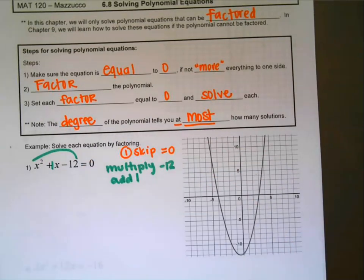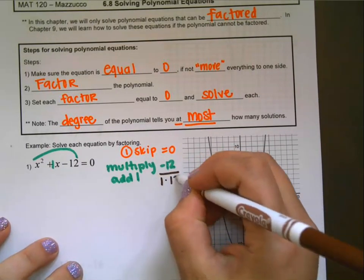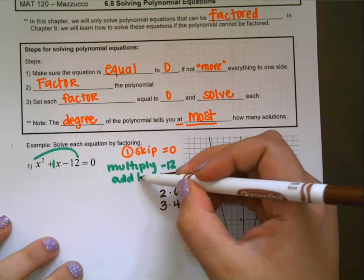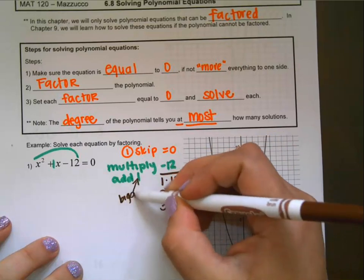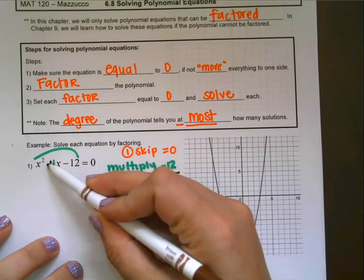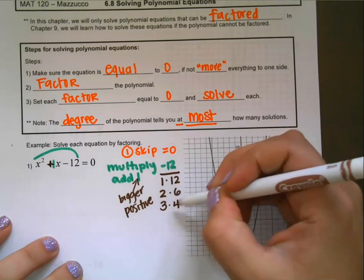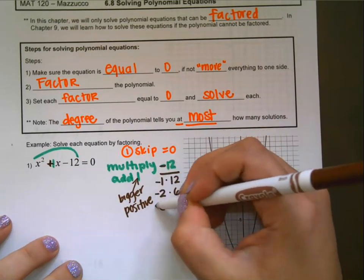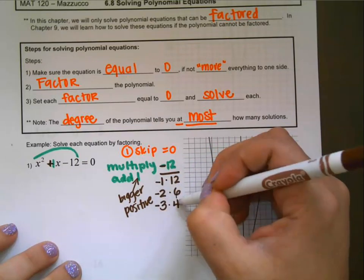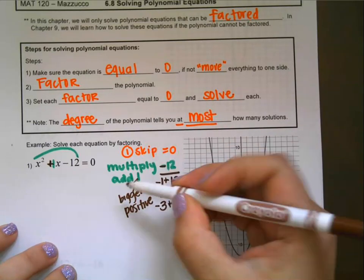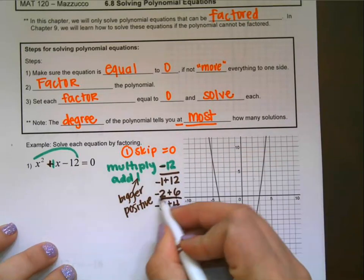Feel free to pause this video and try to figure out what two numbers we should pick. Since it has to add to 1, the bigger number in the pair has to be positive — it always matches this sign. And since it has to multiply to a negative, one of them has to be negative and one positive. The pair that adds to positive 1 would be negative 3 and 4.